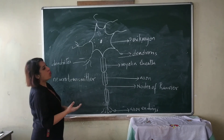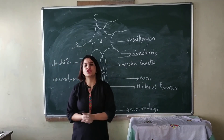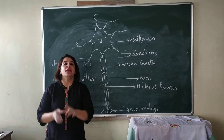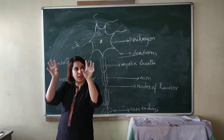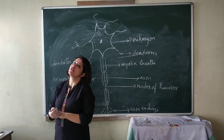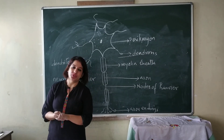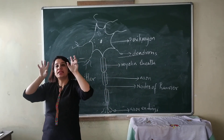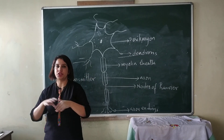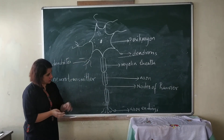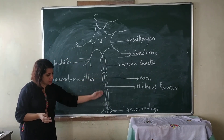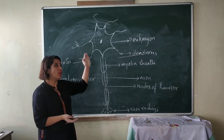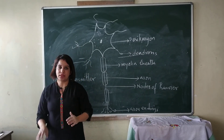What do the dendrons do? Dendrons collect information from other neurons. Axons carry impulse from one neuron to another.